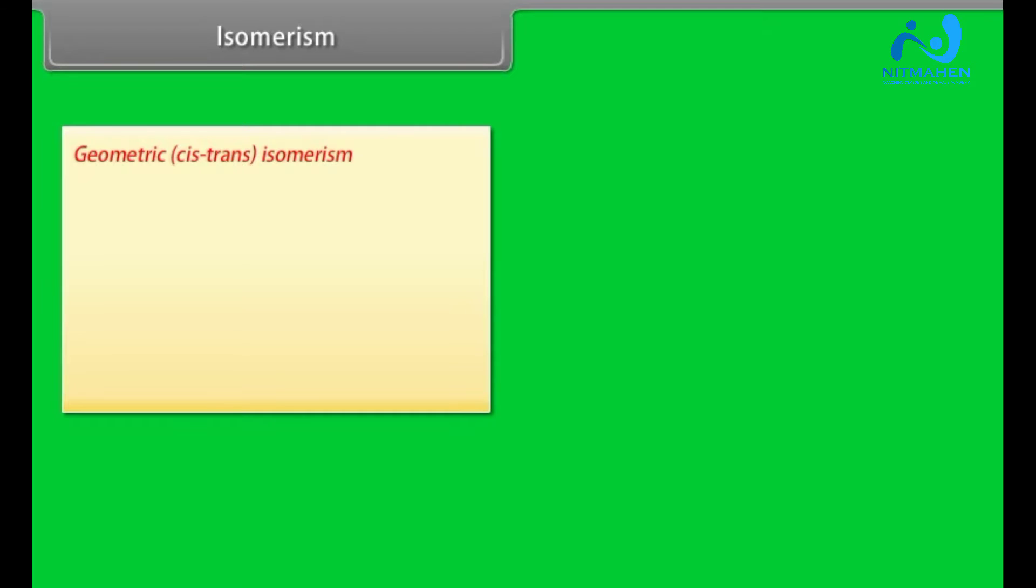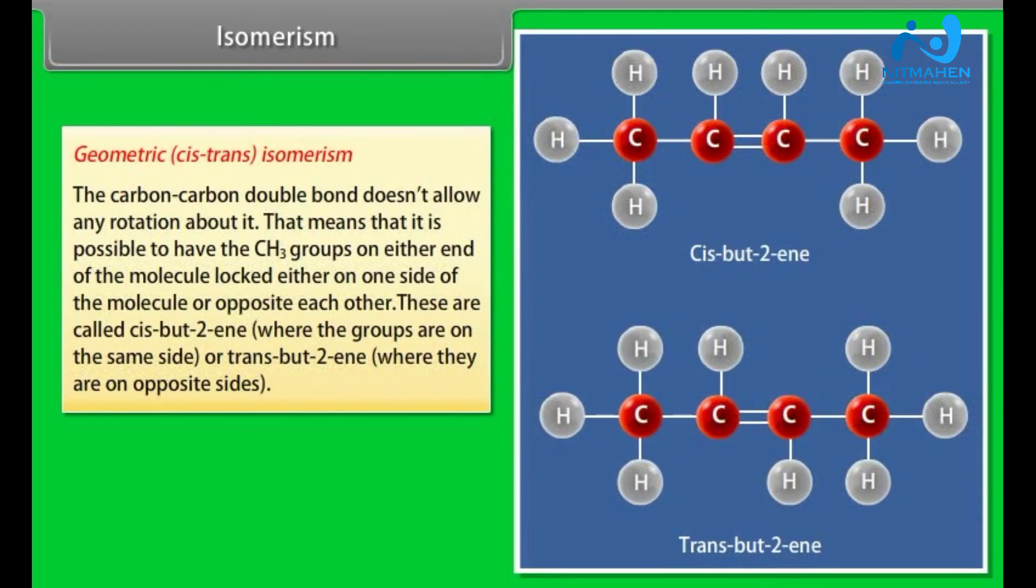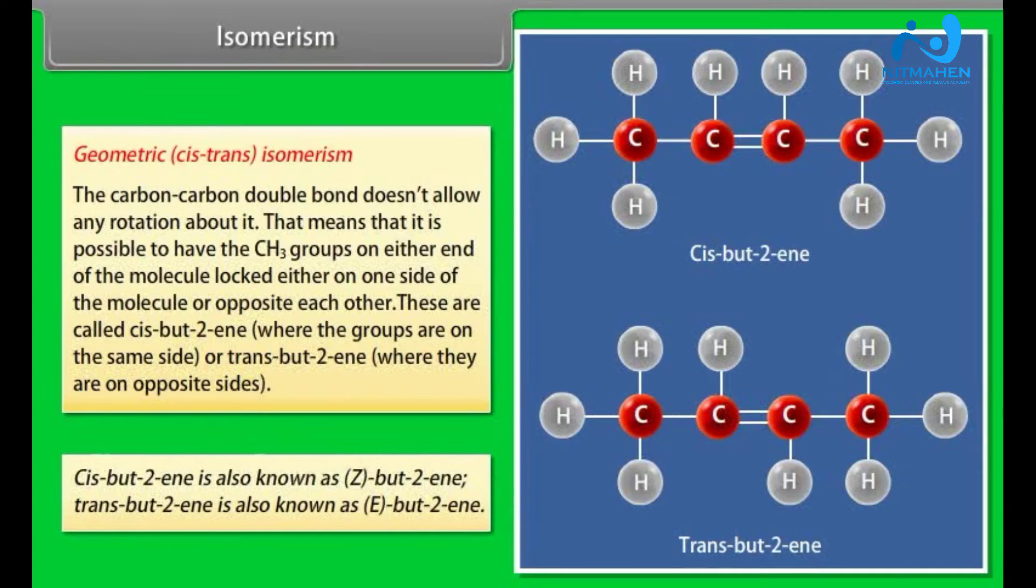Geometric cis-trans-isomerism. The carbon-carbon double bond doesn't allow any rotation about it. That means that it is possible to have the CH3 groups on either end of the molecule locked either on one side of the molecule or opposite each other. These are called cis-but-2-ene where the groups are on the same side or trans-but-2-ene where they are on the opposite sides. Cis-but-2-ene is also known as Z-but-2-ene. Trans-but-2-ene is also known as E-but-2-ene.